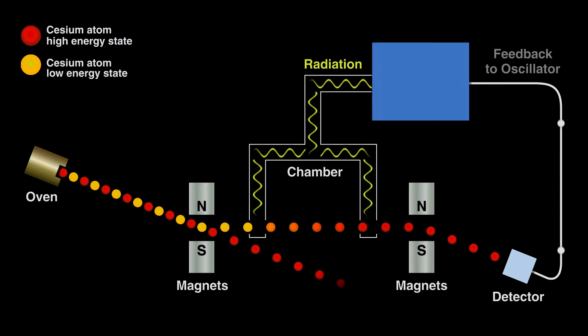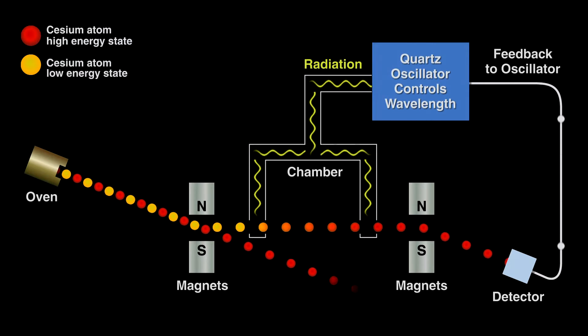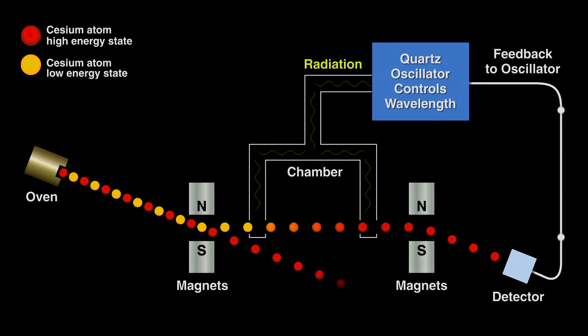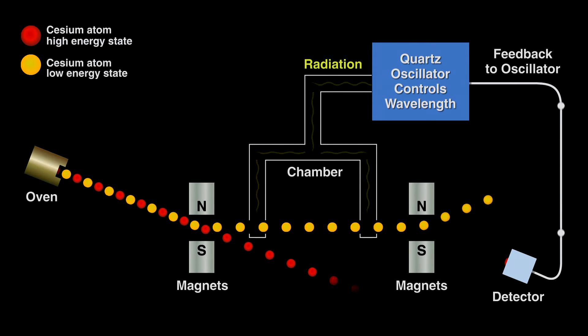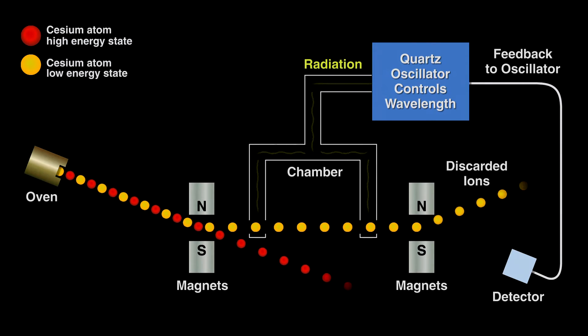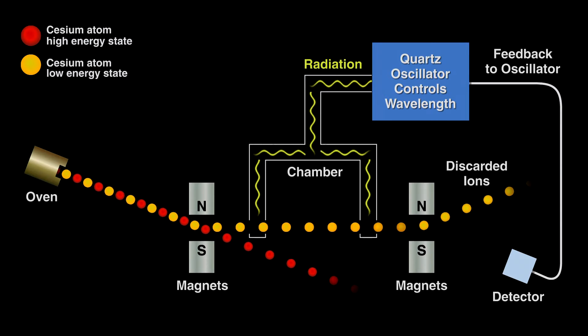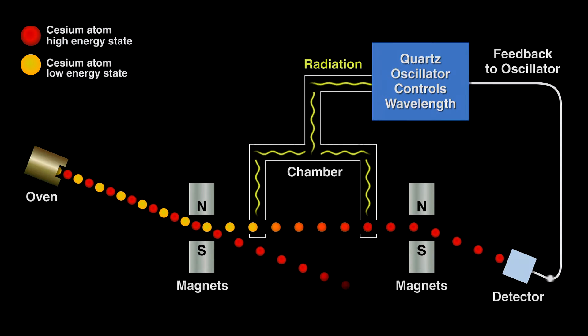The trick here is to tie that current from the detector to the quartz oscillator. When the quartz's oscillations decay, that is, it slows down a little, then the energy bombarding the cesium ions in the chamber changes and fewer high energy ions exit the chamber, so current decreases or stops. This tells the electronics to zap the quartz oscillator and correct the period of oscillation.